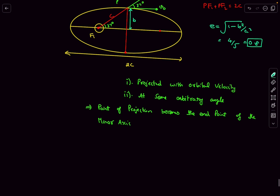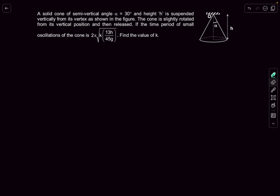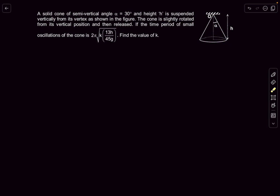So the eccentricity comes out to be 0.8. That was the concept for this question. Now the last problem: we have a solid cone of semi-vertical angle 30° and height h. The cone is slightly rotated from its vertical position by angle θ about a horizontal axis passing through the apex O and then released. We have to find the time period of small oscillations.